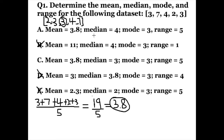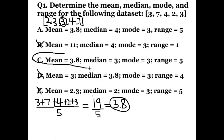Answer choice A has the median as equal to four. If you just look at the original data set without reordering the numbers, it's easy to get the question wrong by thinking that four is the median. However, that's incorrect. The correct answer is C, so we can cross out A.